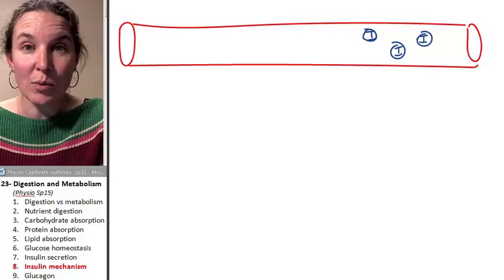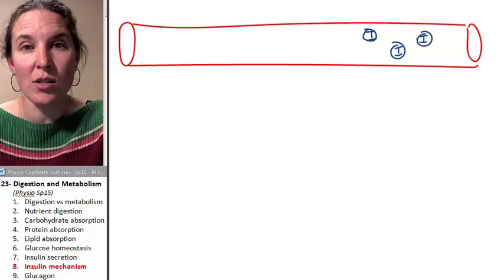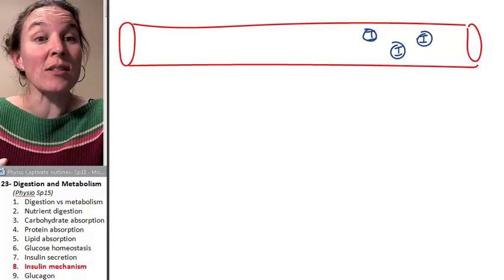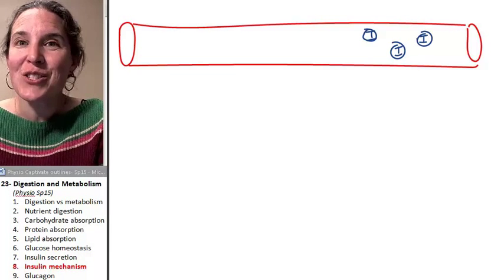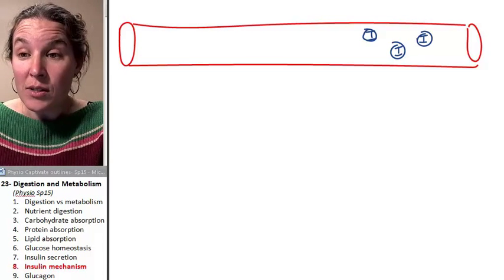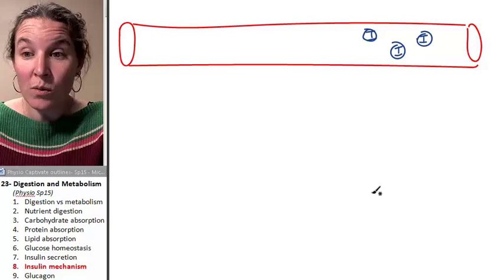Insulin secretion into the blood, that's only part of the story. So now you know how glucose concentrations stimulate this. So we've got glucose in the blood. That's cool. What are we going to do with it?